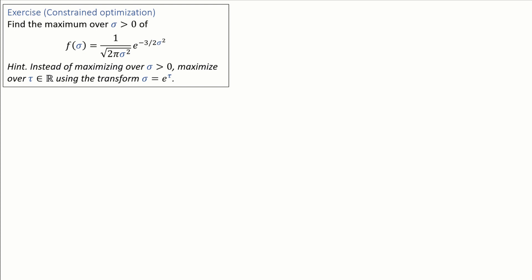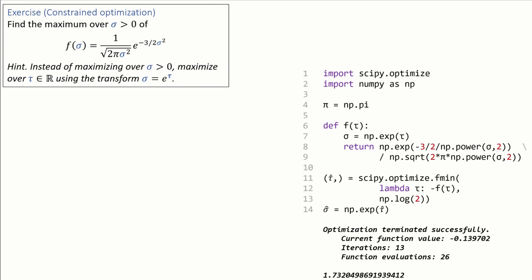Here's the code. First I'm defining my function f. Here I'm defining it as a function of tau and I do the transform to sigma inside the function on line seven. Next I call the optimizer and I want it to maximize f, i.e., I want it to minimize minus f.